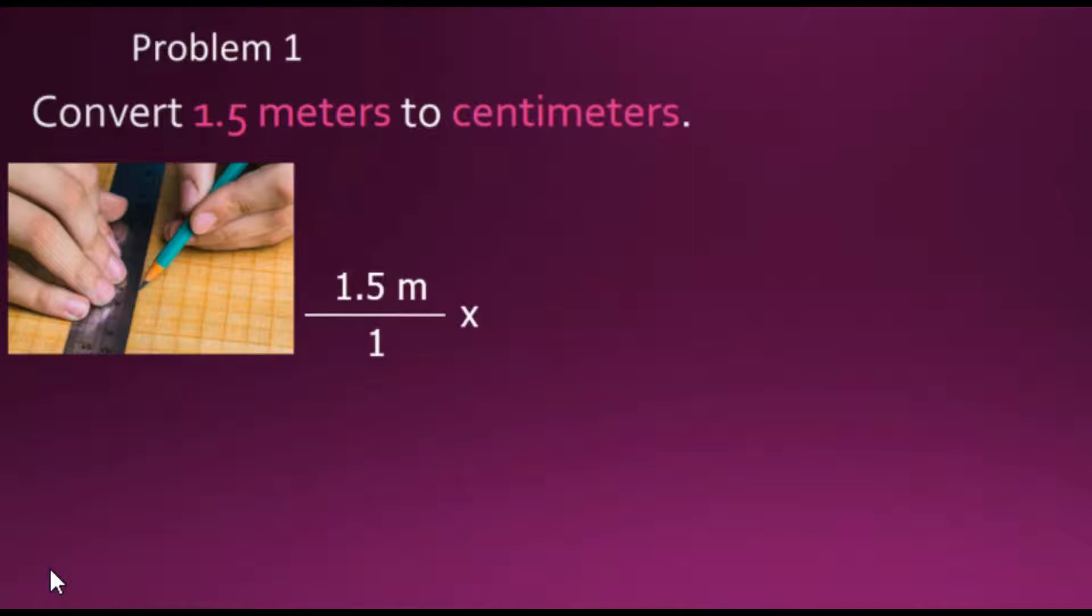Whenever you multiply fraction units, cancel out that are on both the top and the bottom of the fraction. Since we want to cancel out meters, we will place the meter value in the denominator of the conversion fraction. Conversion fractions are fractions with the same measured quantity on the top as well as on the bottom but with different units.